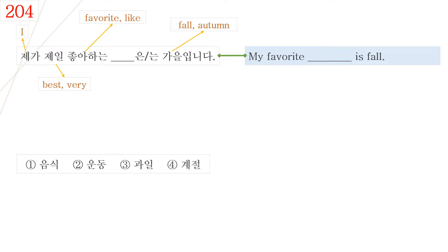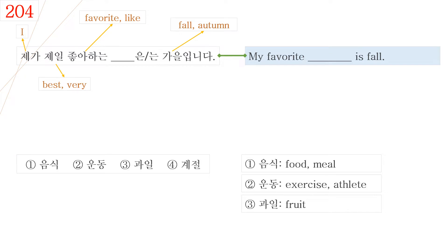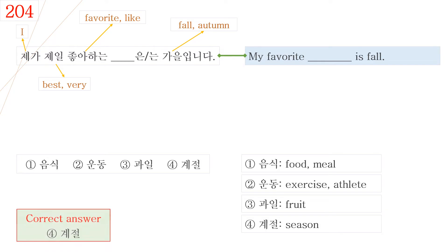Let's see the word in the answer. No. 1 is 음식, it means food or meal. No. 2 is 운동, it means exercise or athlete. No. 3 is 과일, it means fruit. No. 4 is 계절, it means season. So the correct answer is No. 4, 계절.